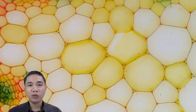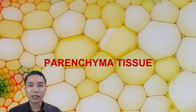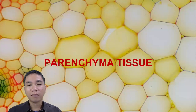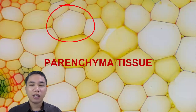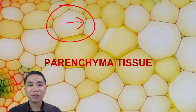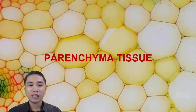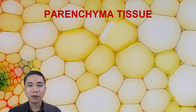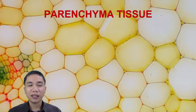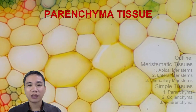Parenchyma tissue, composed of parenchyma cells, is the most abundant tissue type in flowering plants. They are usually spherical in shape, but their thin walls flatten when pushed side by side by neighboring cells. They have large vacuoles and store a variety of phytochemicals.